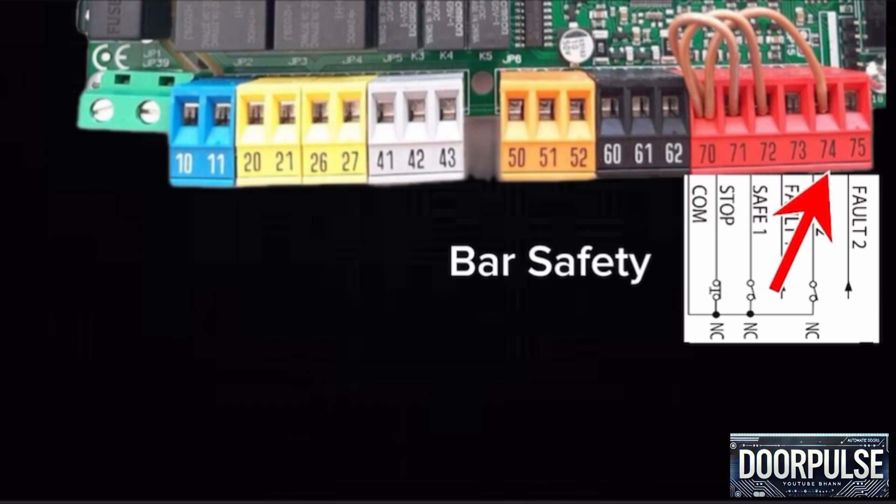Terminal 74 is configurable safety input NC contact. By default bar will connect here. If not used leave jumper inserted.